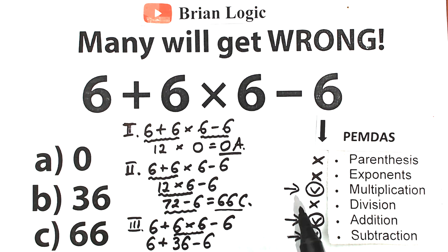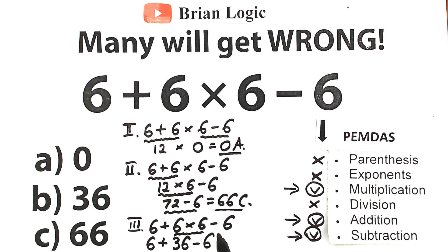Now we complete the multiplication part and move to addition and subtraction from left to right. We have 6 plus 36 equal to 42, and 42 minus 6 equal to 36. This is Option B.